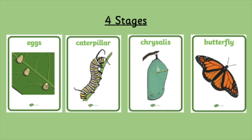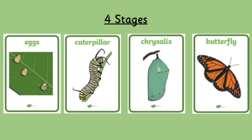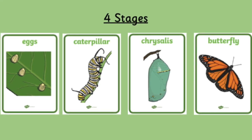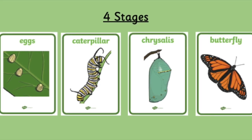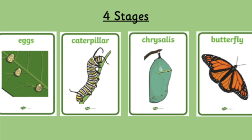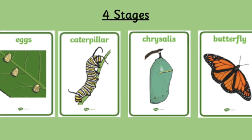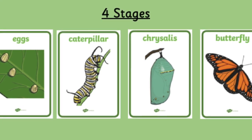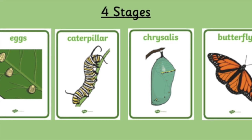So here we can see all four stages of the cycle: eggs, caterpillar, chrysalis, butterfly. Have a go at saying the four stages yourself.